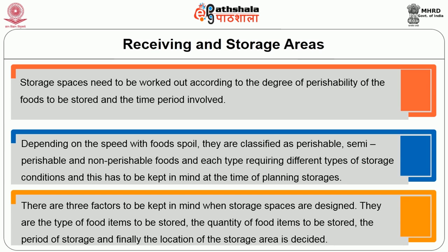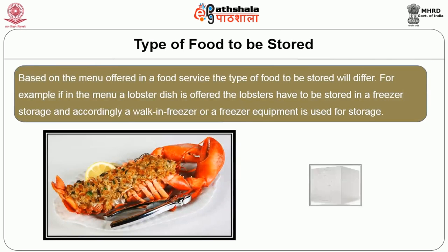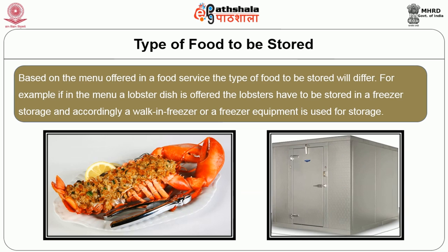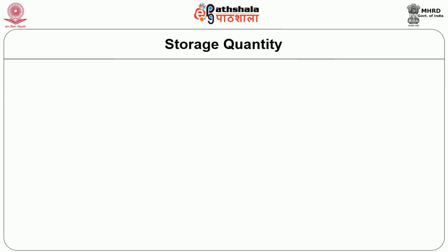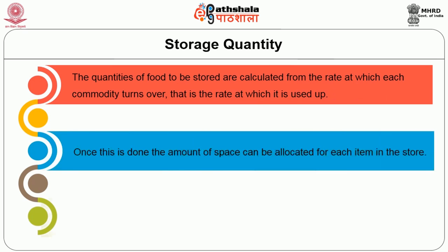Based on the menu offered in the food service, the type of food to be stored will differ. For example, if a lobster dish is on the menu, the lobsters have to be stored in a freezer and accordingly a walk-in freezer or freezer equipment is used. The quantities of food to be stored are calculated from the rate at which each commodity turns over — that is, the rate at which it is used up. Once this is done, the amount of space can be allocated for each item in the store.